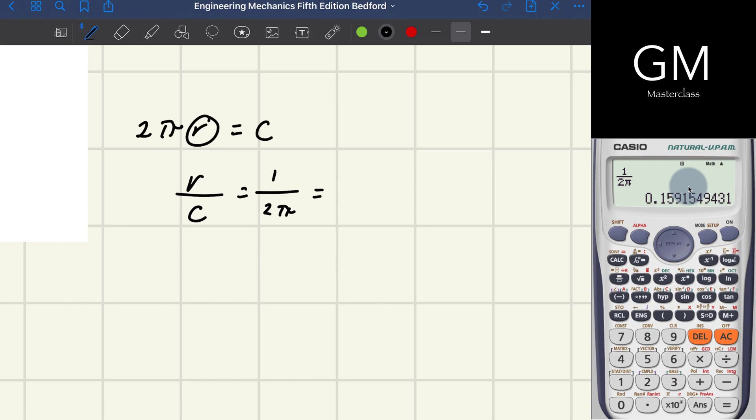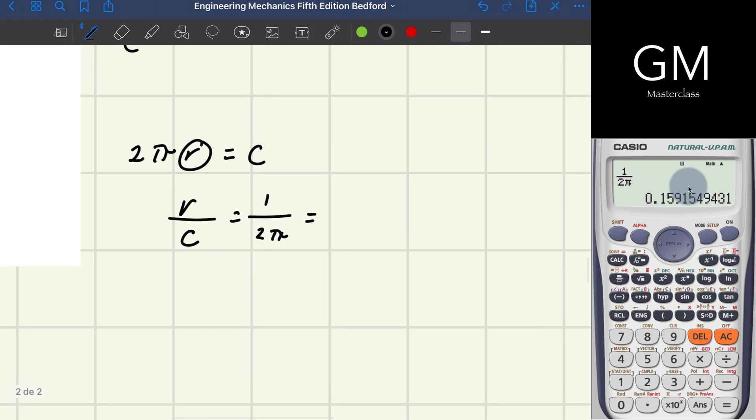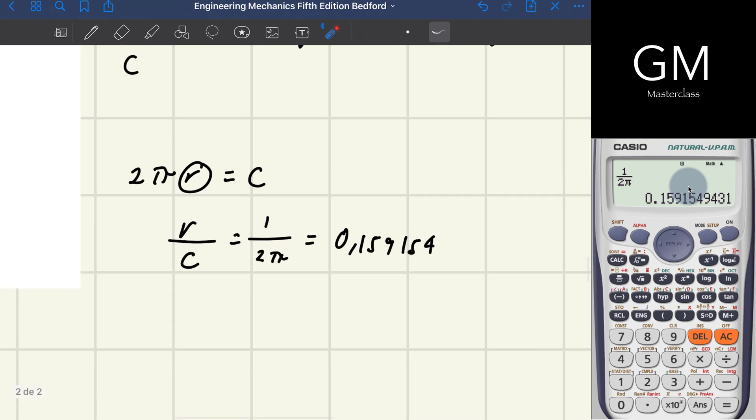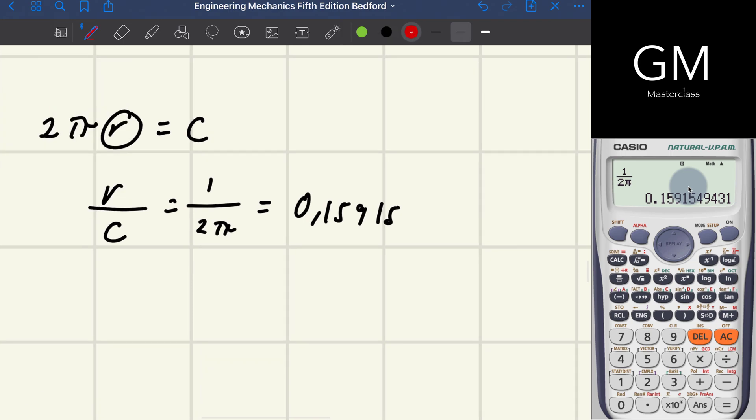The problem says we have to take into account just 4 significant digits. So I need to look at this digit here.